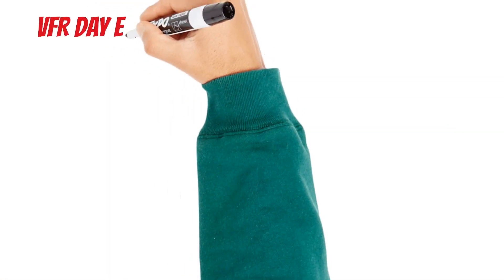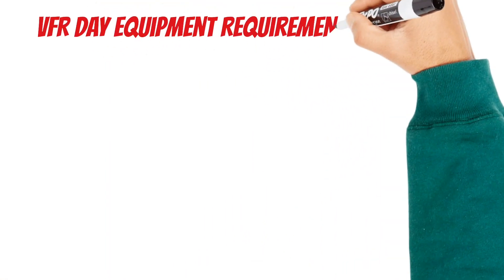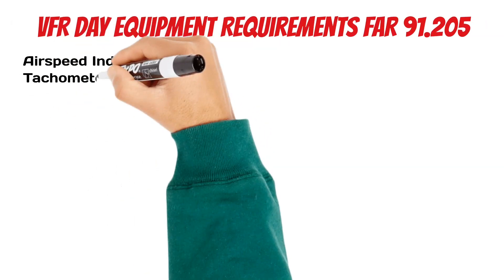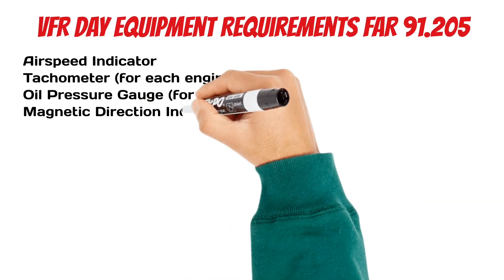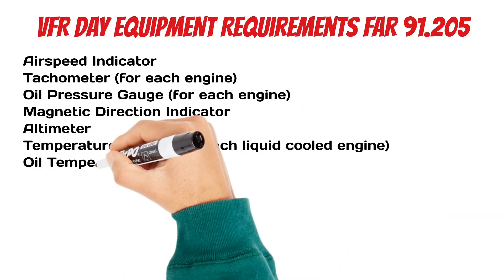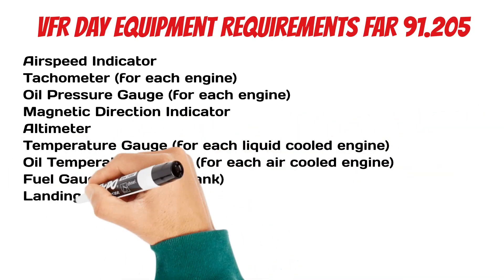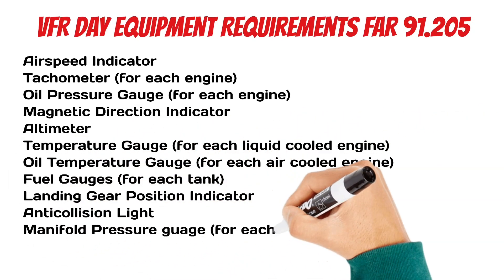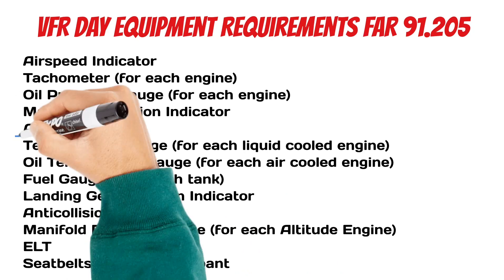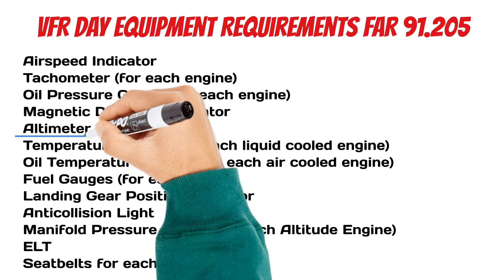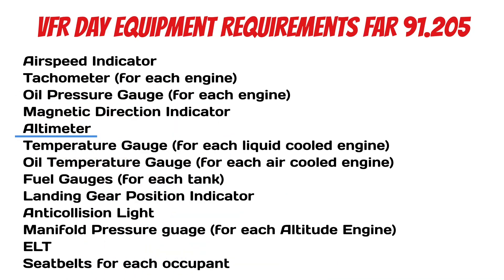So check this out. Take a look at the VFR day minimum equipment requirements in FAR 91.205. If you'll notice, you have to have an altimeter any time you fly an airplane under visual flight rules. And if an altimeter is that important to VFR flight, you should definitely know how to use it. And that's what this lesson is about today.